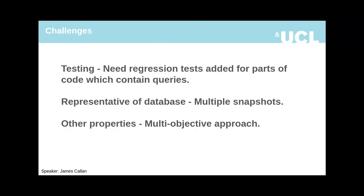What challenges are there? Testing is the main challenge. GI should be applied to well-tested regions of code which exercise the results of queries, testing the queries in context rather than directly. We must test queries on representative databases. Since databases change over time, testing snapshots from various time periods would be useful for finding changes which generalize.